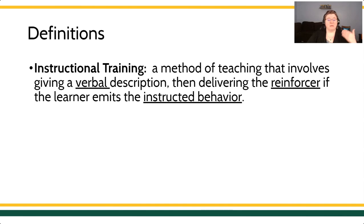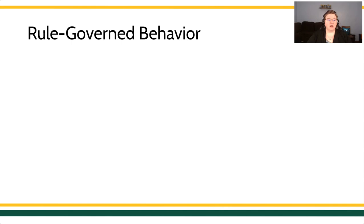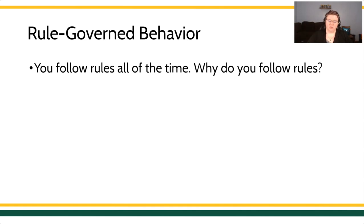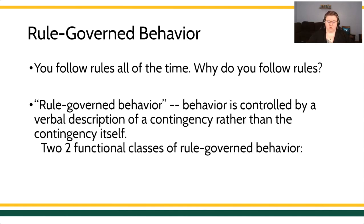In this particular case, I'm going to describe the skill. If the learner performs the skill, I'm going to deliver the reinforcer. Since what we're talking about is behavior essentially coming under control of a verbal stimulus, like a description of the performance, this is an excellent time to talk about rule-governed behavior — behavior that comes under control of our verbal repertoire. Rule-governed behavior is controlled by a verbal description of a contingency rather than the actual contingency. Two functional classes of rule-governed behavior exist: Pliance and Tracking.